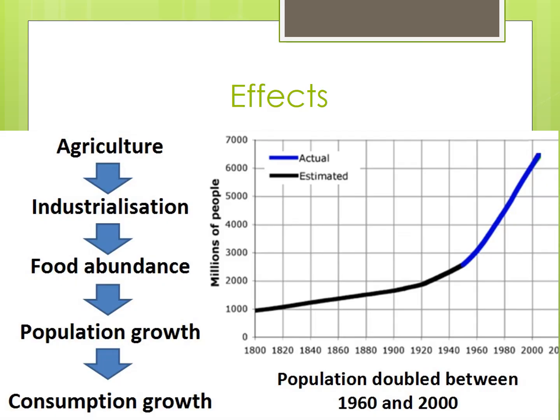The expanding population increased the pool of available workers, but it also affected the urban infrastructure, causing increased demand for water, problems with sanitation, a housing shortage, and increased the wealth and opportunity gap between workers and management.